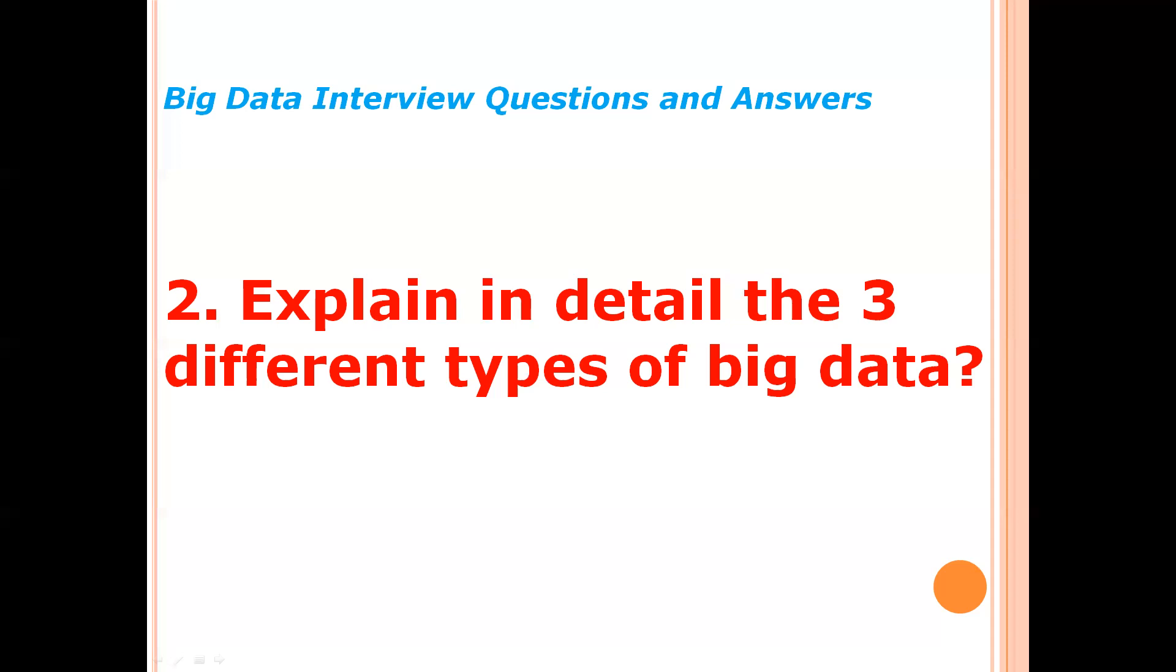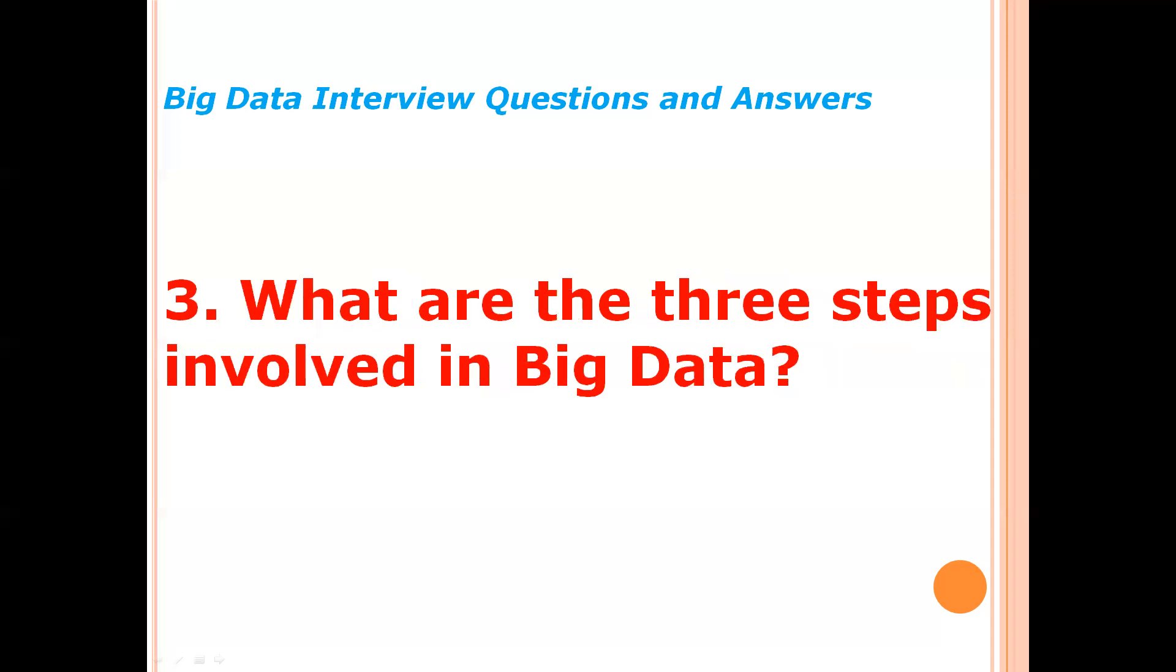What are the three steps involved in big data? The three essential steps involved in big data are: one, data ingestion—the process of collecting or streaming information from various sources like log files, social media files, and SQL databases. Second, data storage.